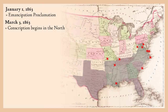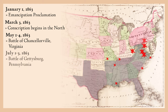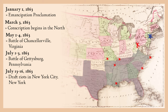March 3, 1863 — conscription, or the drafting of soldiers into military service, begins in the North; it had begun in the South the year before. May 1–4, 1863 — the Battle of Chancellorsville, Virginia, is General Lee's greatest victory, but results in the death of Stonewall Jackson. July 1–3 — the Battle of Gettysburg, Pennsylvania; the bloodiest battle of the Civil War dashes Robert E. Lee's hopes for a successful invasion of the North. July 13 — draft riots begin in New York City, as disgruntled workers, seething over a draft system that seemingly favors the rich, attack the draft office and African-American churches.